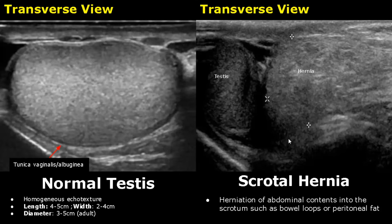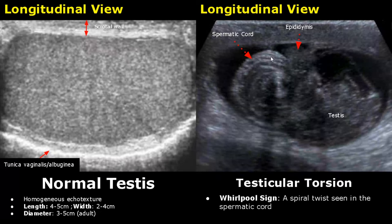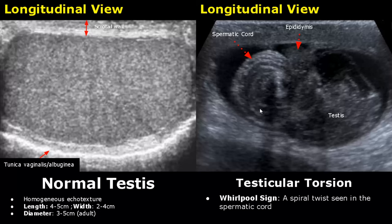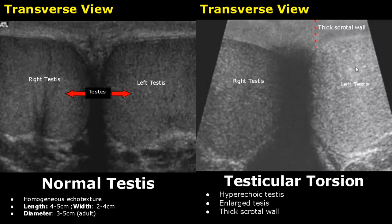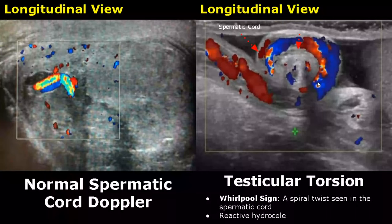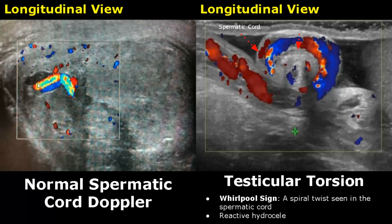In testicular torsion there is twisting of the spermatic cord which can cut off blood supply to the testis. One classic sign on ultrasound is the whirlpool sign — it appears as a spiral twist in the spermatic cord with alternating hyperechoic and hypoechoic rings. In this transverse view showing both testes, there is torsion of the left testis — it is hyperechoic and larger than the normal right testis, with scrotal wall thickening. Here we have the whirlpool sign, seen better with color Doppler compared to the normal spermatic cord flow. There is also a hydrocele caused by the torsion.